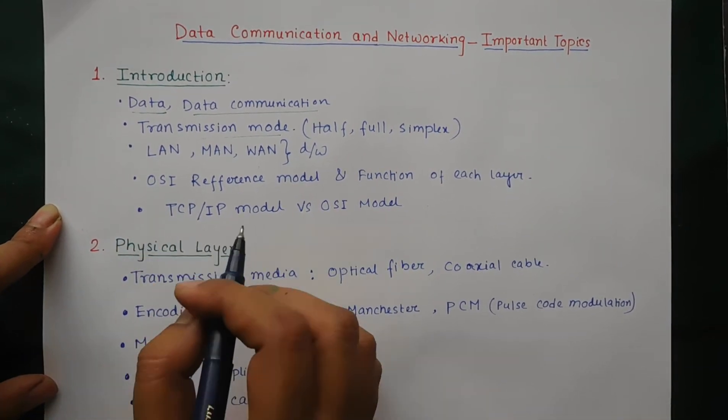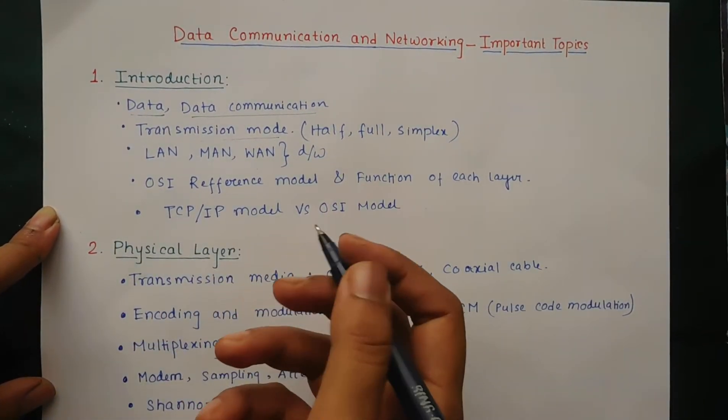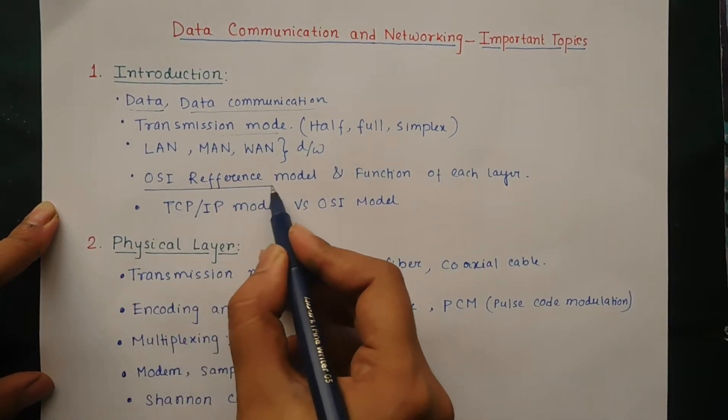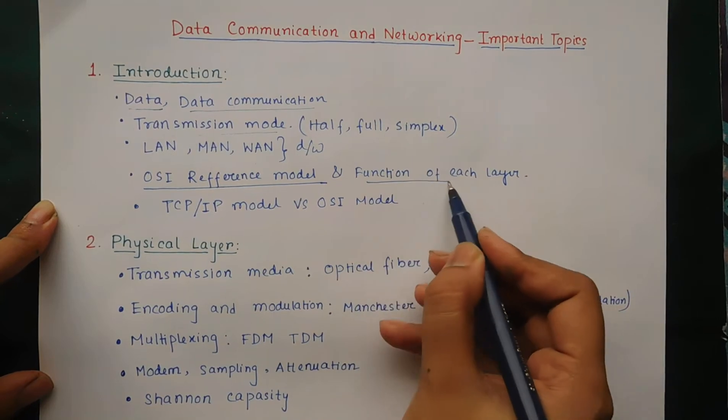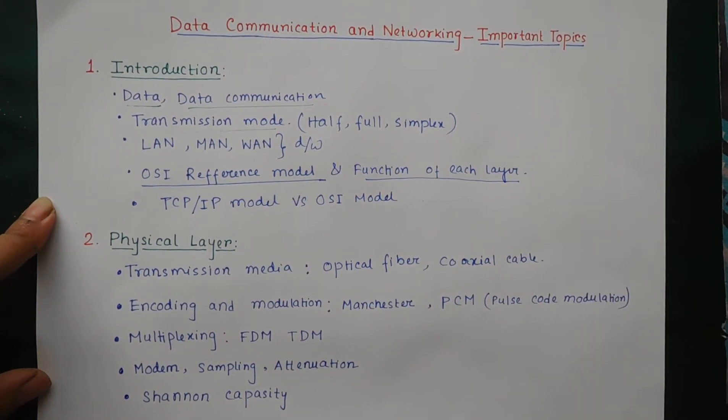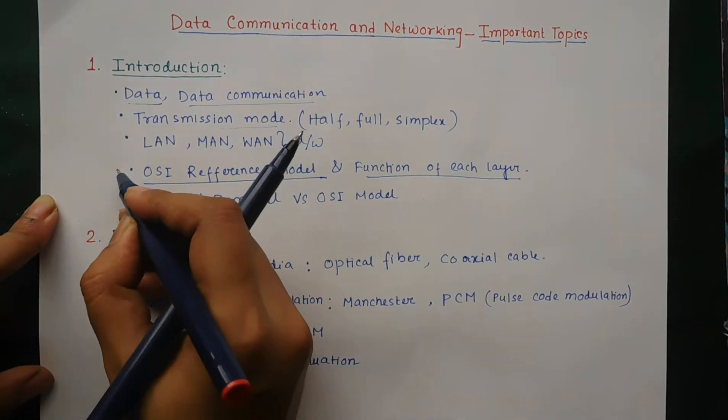Then the most frequent question asked in your exam: the OSI reference model and function of each layer. Each layer means its seven layers. So this is very important.